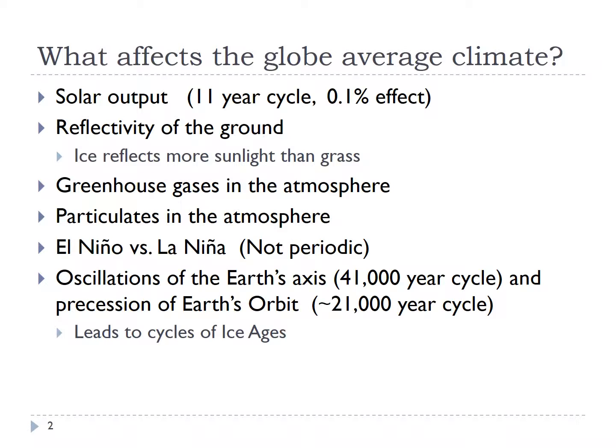Some of these factors are periodic, like solar output. Others fluctuate, such as changes in El Niño and La Niña. And there are very periodic oscillations over long timescales — oscillations in the Earth's axis on the order of 41,000 years, and oscillations in the precession of the Earth's orbit on roughly a 21,000-year cycle. These last ones lead to the cycles of ice ages and the thawing that follows.